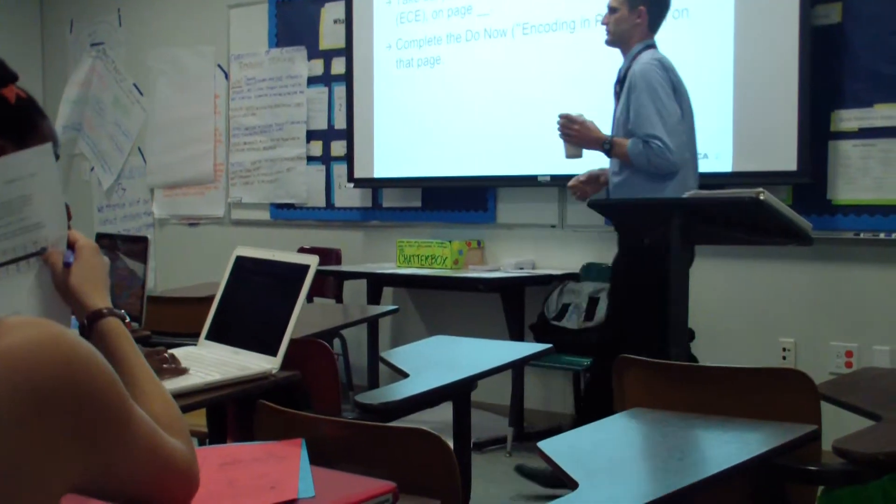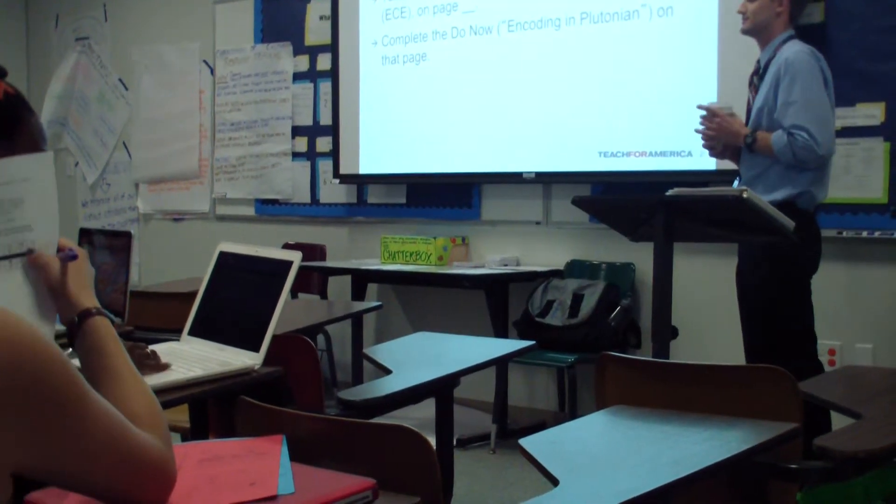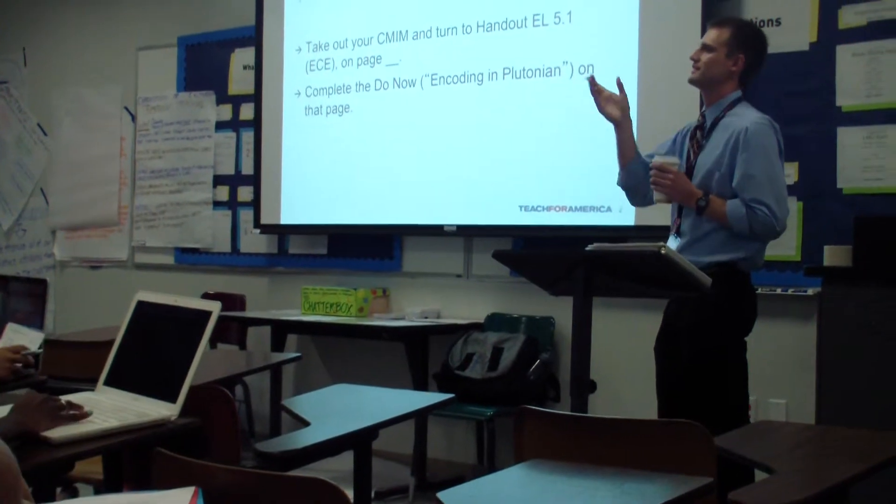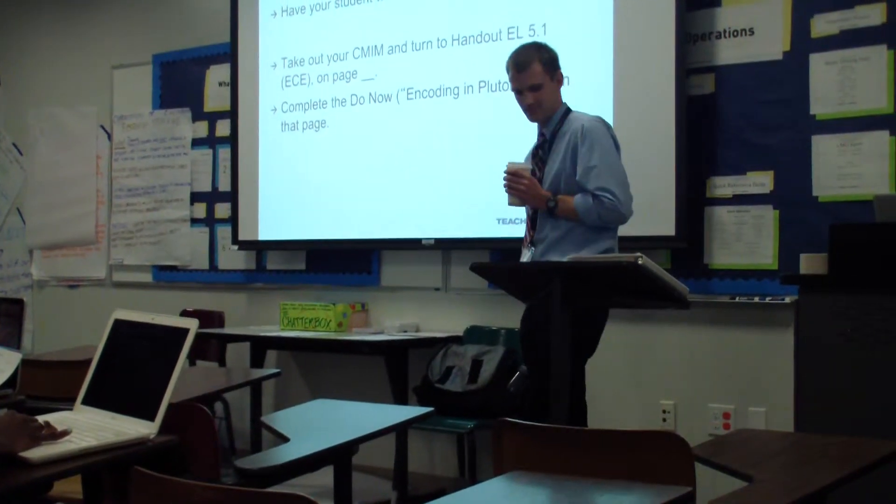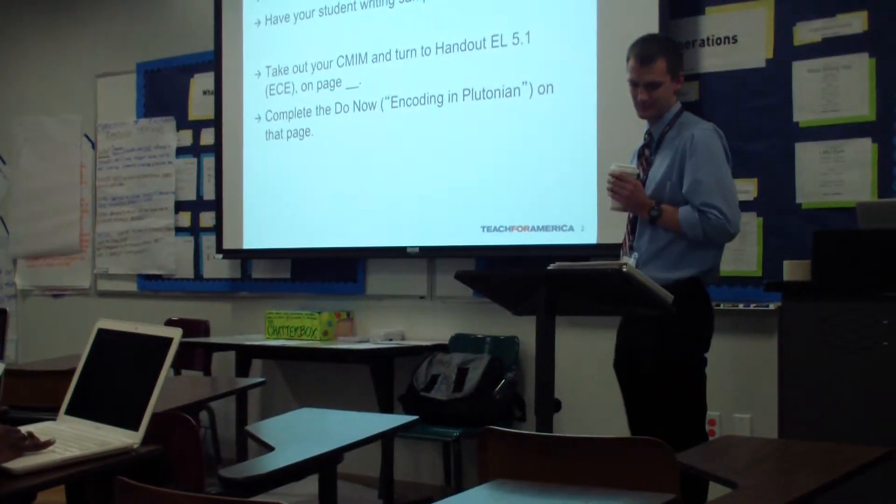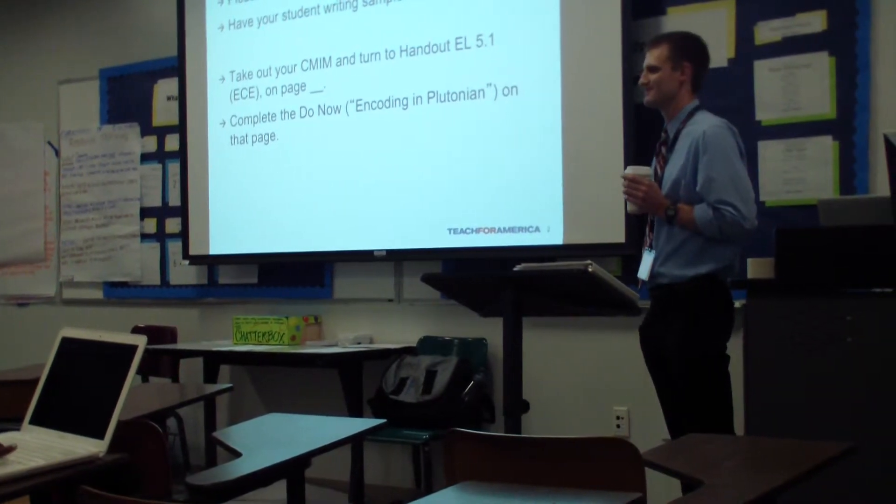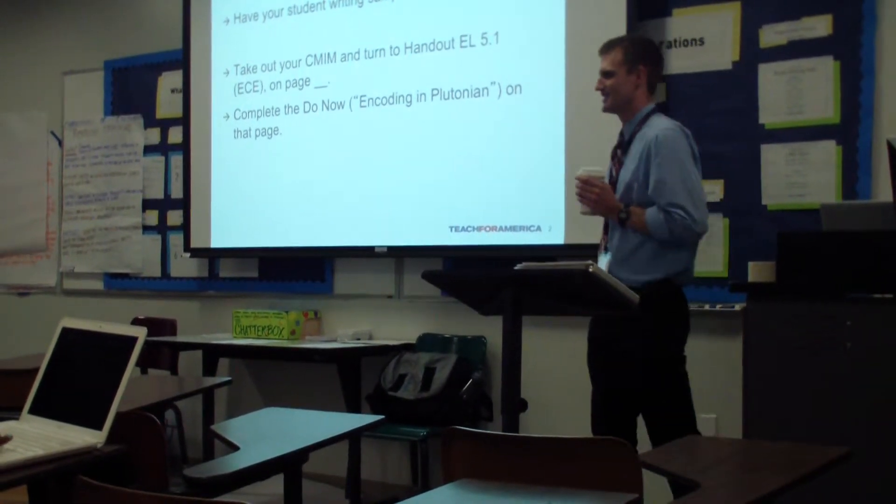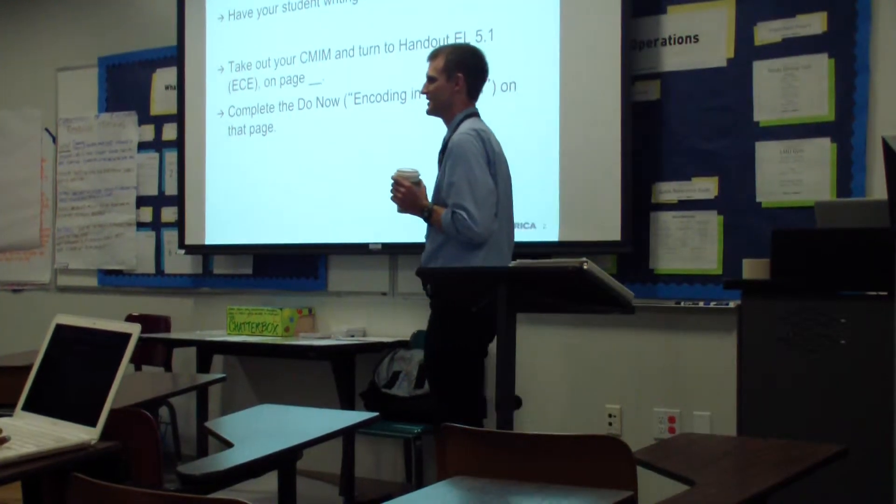One student shares their challenge with the encoding exercise, explaining that seeing symbols similar to known letters was difficult. For example, the E had an M-like symbol, so whenever they looked at it they thought M, making it really difficult to write when thinking it's an E.